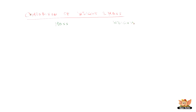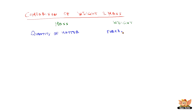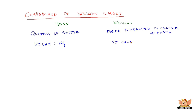Let us now compare mass and weight, having understood both concepts. Mass is the quantity of matter contained in an object — that is why it does not change. Weight, on the other hand, is the force with which an object is attracted to the centre of the Earth (or centre of the Moon, if on the Moon) — it depends on where it is located. The unit of mass is kg, while the unit of weight is Newton (N), because weight is a force.